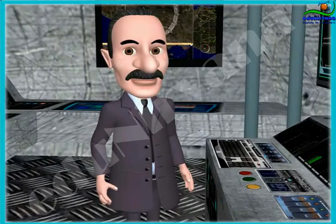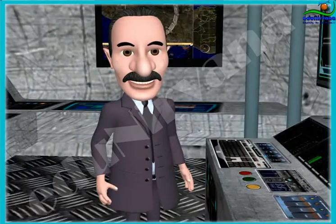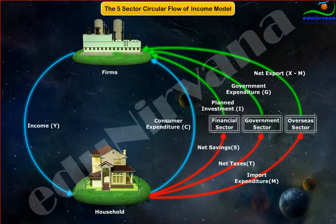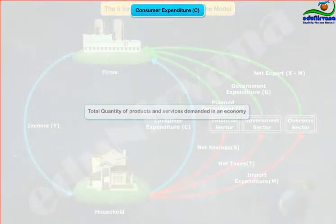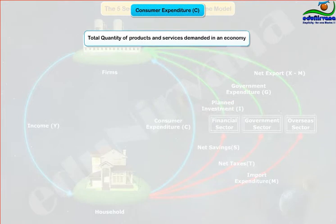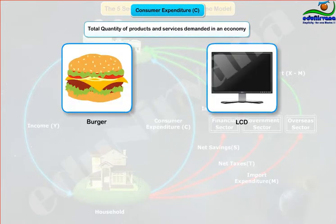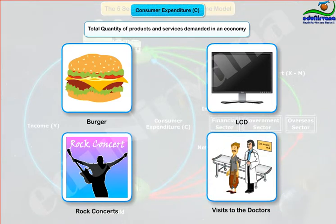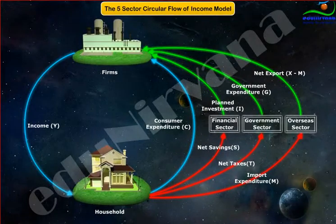The total quantity demanded of an economy's output is the sum of four types of spending. First, consumer expenditure — the total demand for consumer goods and services like burgers, LCD TVs, rock concerts, visits to the doctor, etc. Precisely, the expenses that all of us make as individuals.